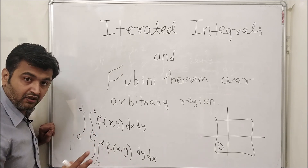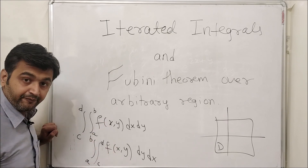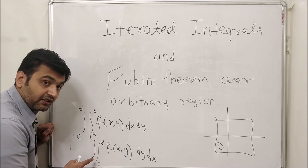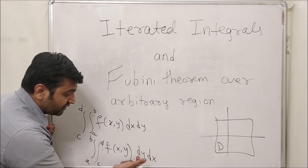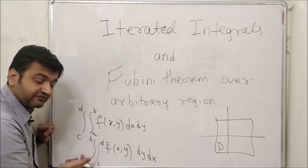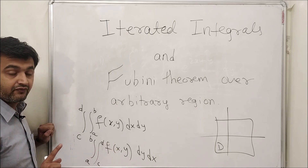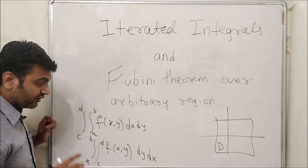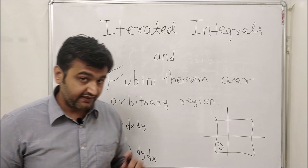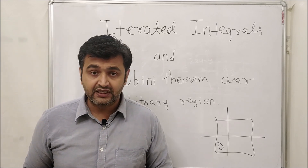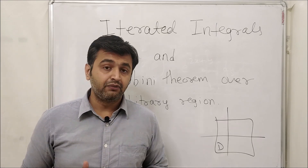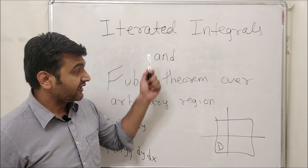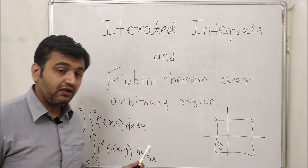But when you have variables in your limits and you interchange the order, it will not simply get flipped as it did for rectangles. You have to take care of a few points, and that's what I'm going to show you today with the help of examples. So let's look at examples over arbitrary regions.